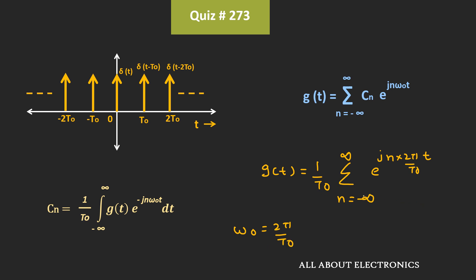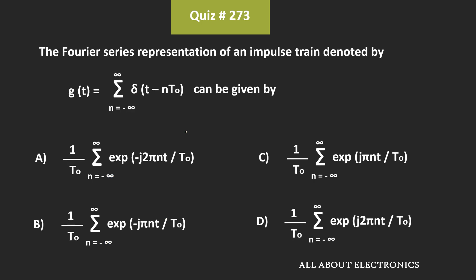And this is the Fourier series representation of this impulse train. So from this, we can say that for the given question, D is the correct answer.